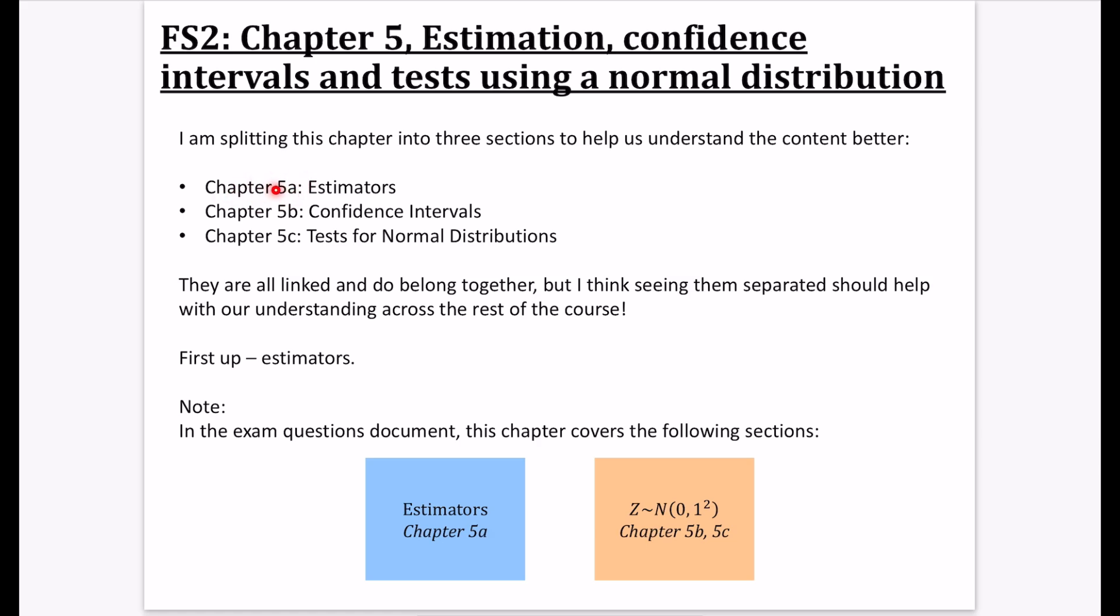I'm calling it Chapter 5A, which is about estimators. Chapter 5B introduces Confidence Intervals, which will get used throughout the rest of the textbook. And Chapter 5C covers tests for normal distributions, extending from Further Stats 1 and Stats 2. They're all linked and belong together, but seeing them separated should help with our understanding.